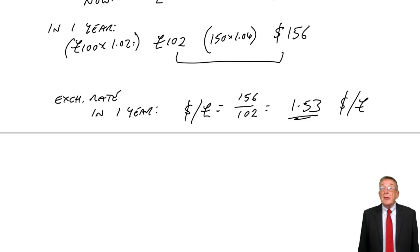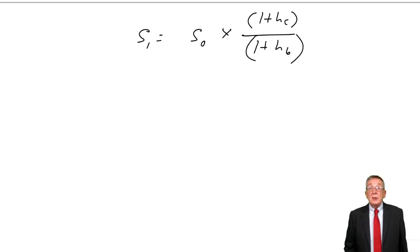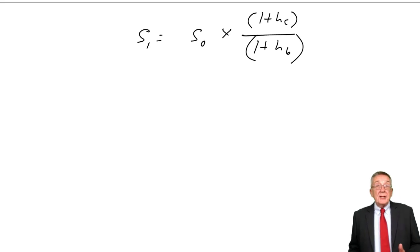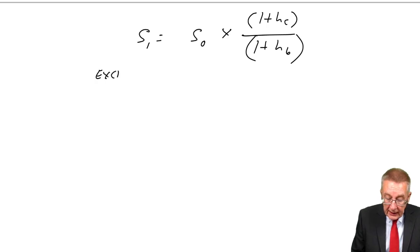That's the logic of purchasing power parity. However, as I said, there is a formula. You're given it on the formula sheet, and I printed it in the notes as well. The formula S1 equals S0 times (1 + HC) over (1 + HB). S stands for spot rate, the rate on a particular day. S1 is the exchange rate in one year.